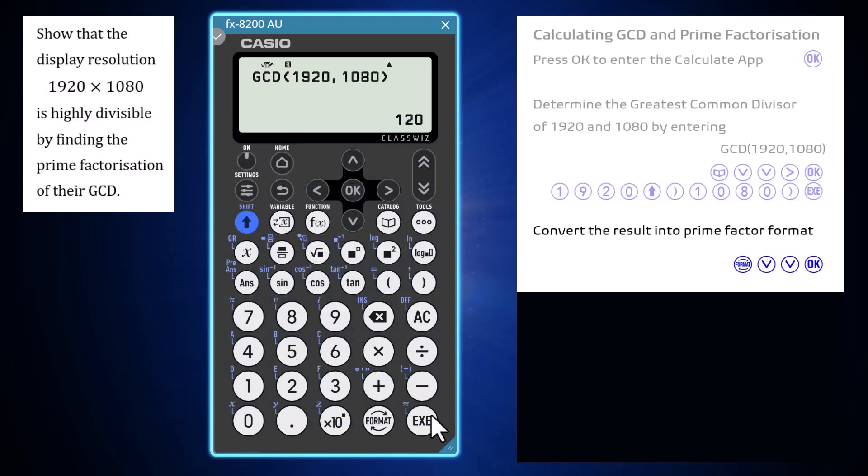To find out how many divisors 1920 and 1080 have, we need to represent their GCD in prime factor format. Do this by pressing format, arrowing down and pressing OK to choose prime factor. So the GCD is 2 to the power of 3 by 3 to the power of 1 by 5 to the power of 1.